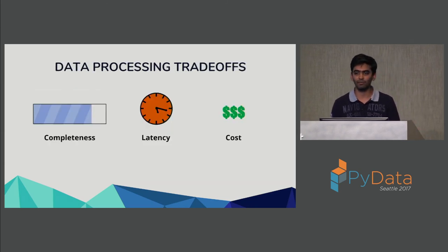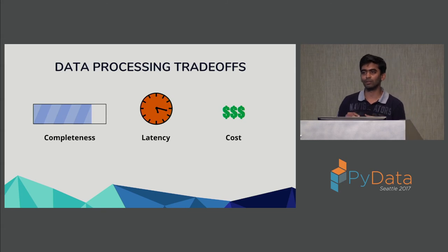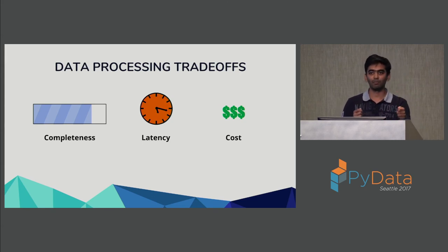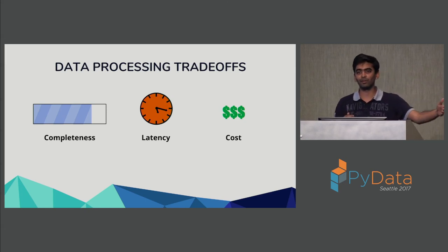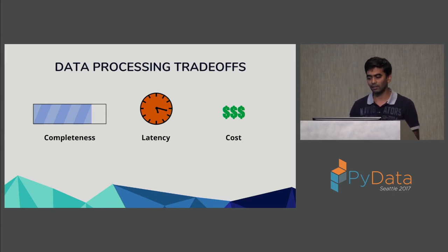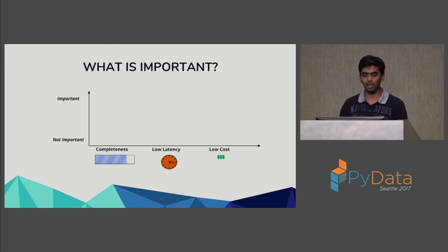In most data processing jobs you're making a trade-off between three choices: completeness — how correct or good are your results; latency — if you wait too long to guarantee you've seen everything, you only get results once every 24 hours instead of continuously; and cost — minimizing cost for every one of these jobs is definitely important.